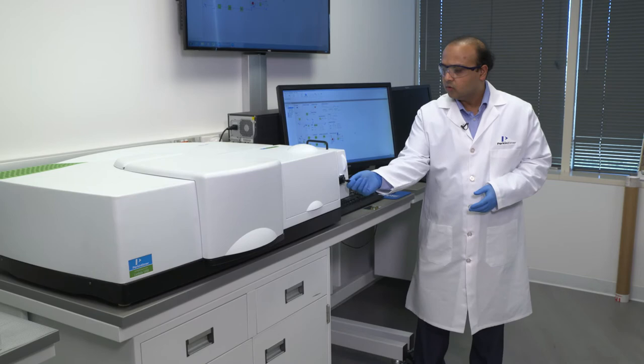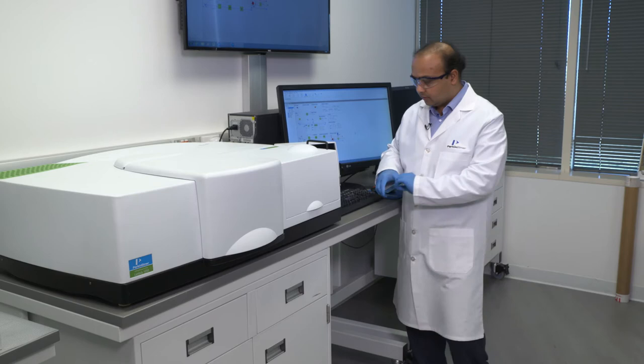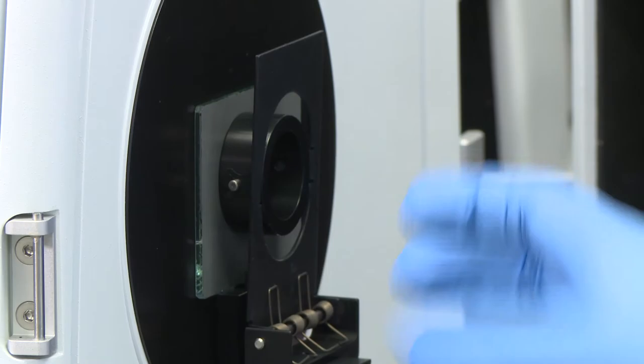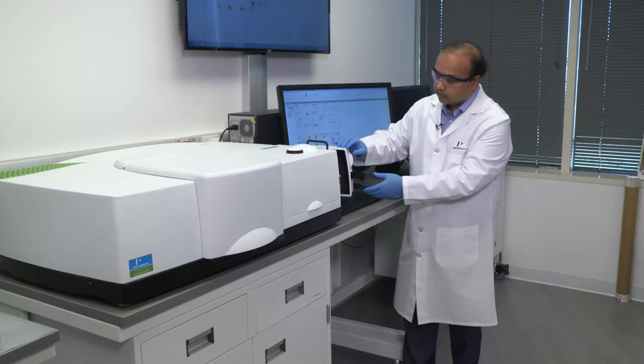In order to make reflectance measurements on the sphere, we will use the back port of the sphere. And in this example, I have a glass mirror, which I'll take off the spectralon and position the glass sample here. Again, this is spring loaded here, so it goes right in place. And we're able to make, once we close the door, we're able to make total reflectance measurements on the sample.